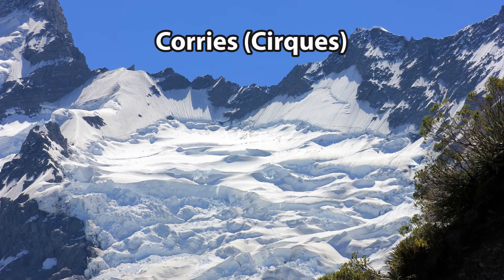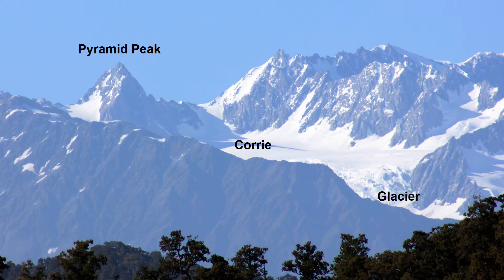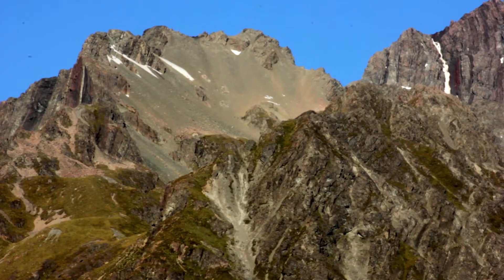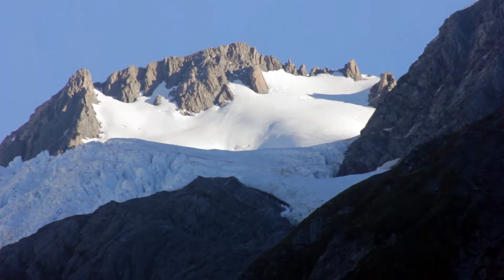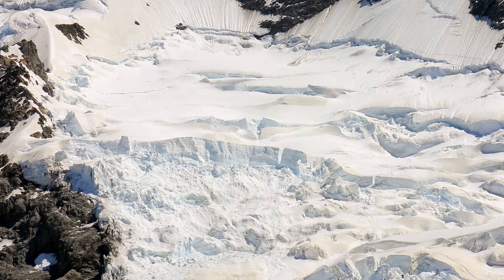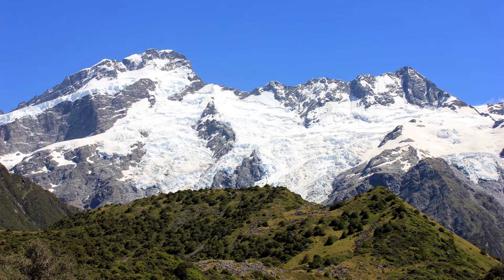A Corrie, also known as a Cirque, is an erosion feature formed at the starting point of a glacier. Corries have a rounded hollow with a steep back wall. They form when snow accumulates in hollows on mountainsides, slowly accumulating enough to turn into ice. This ice slowly gouges out a steep back wall through the processes of freeze-thaw and plucking.